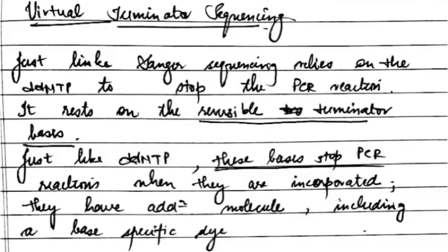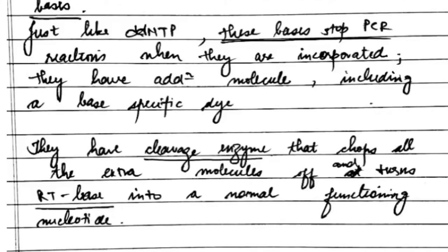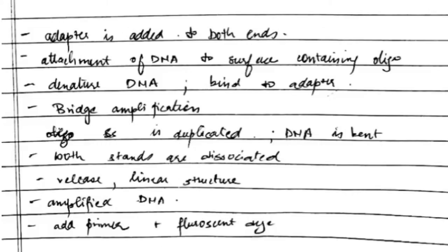Just like Sanger sequencing relies on ddNTPs to stop the PCR reaction, virtual terminator sequencing relies on a reversible terminator basis. It has a cleavage enzyme that stops all the extra molecules and then turns the reversible terminator base into a normal functioning nucleotide. The adapter is added to both ends.